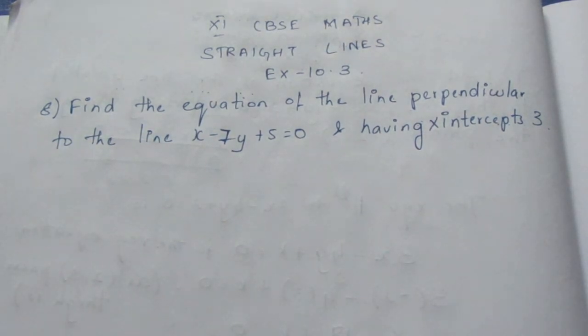Find the equation of a line perpendicular to the line x minus 7y plus 5 equal to 0 and having x-intercept 3.